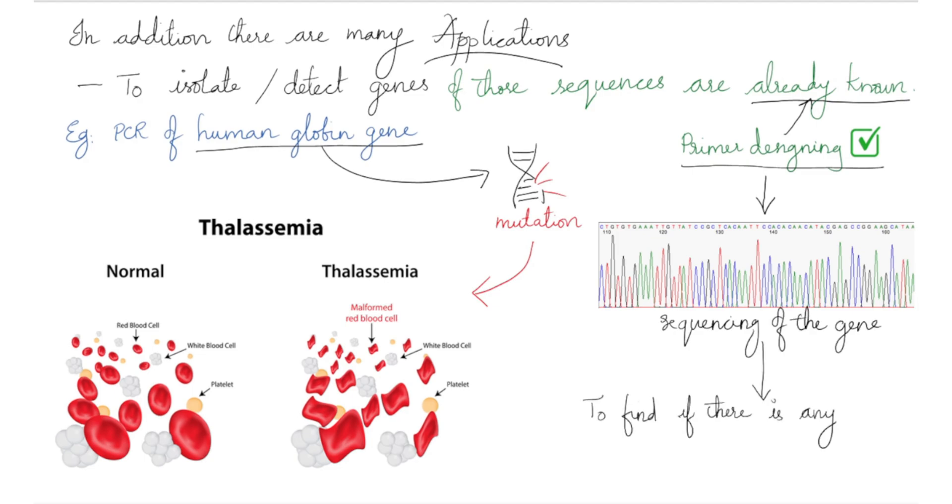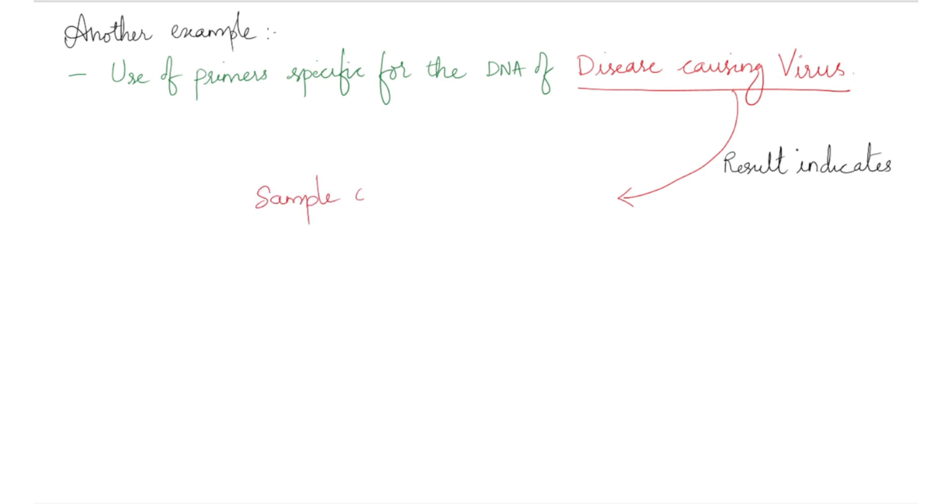After the PCR, the gene copies are sequenced or studied in some way to determine if any of the thalassemia mutations are present. Another clinical application of PCR involves the use of primers specific for the DNA of a disease-causing virus. A positive result indicates that a sample contains the virus and that the person who provided the sample should undergo treatment to prevent onset of the disease.